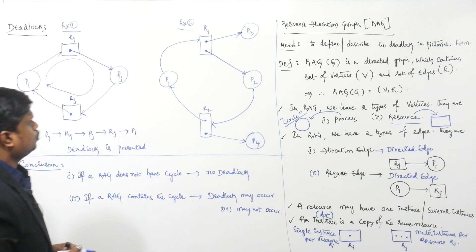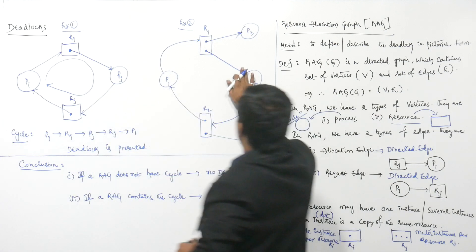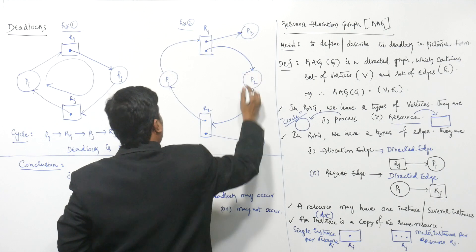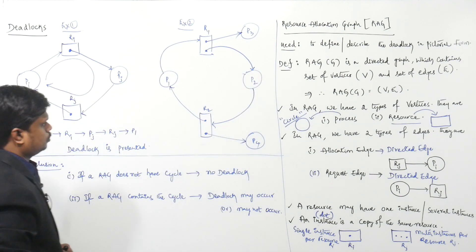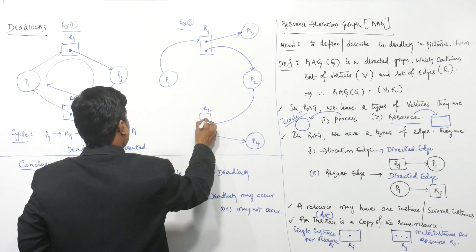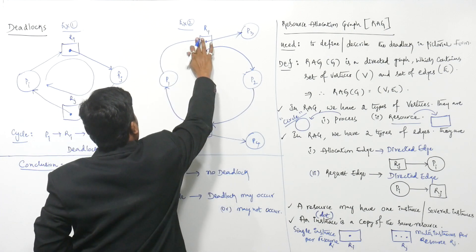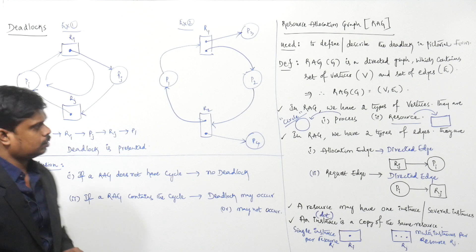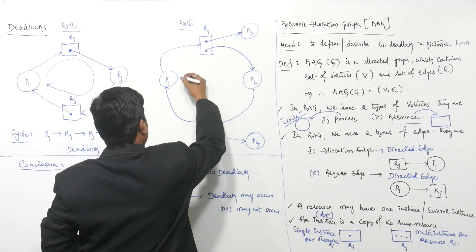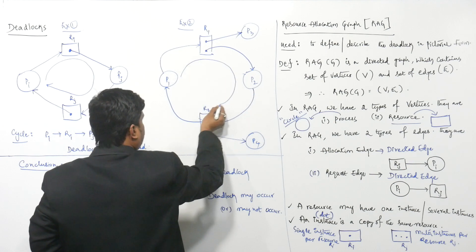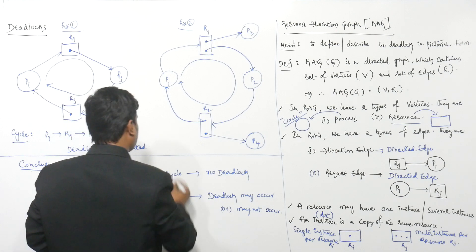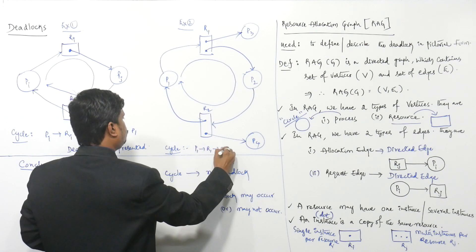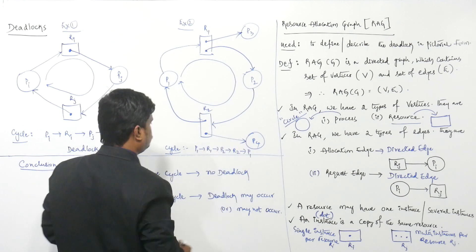Both resources are not free. Process p2, while holding one instance of resource r1, is expecting an instance of resource r2. So, r1 has one instance allocated to process p2, and process p2 is waiting for resource r2. Do I have a cycle here? Yes, I have a cycle: p1 to r1, r1 to p2, p2 to r2, r2 to p1. I have the same cycle.